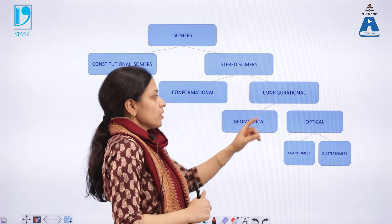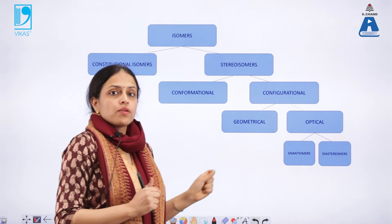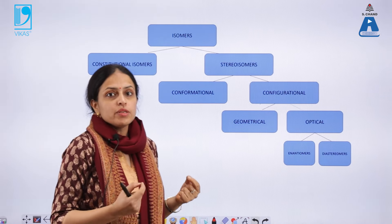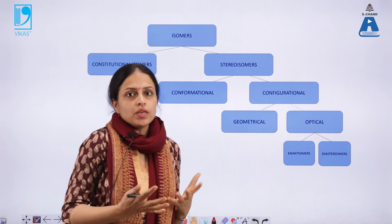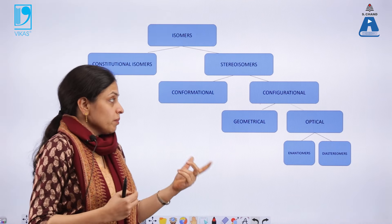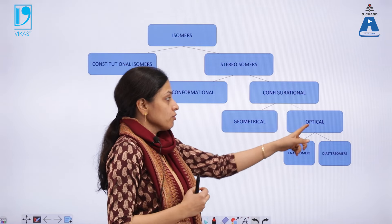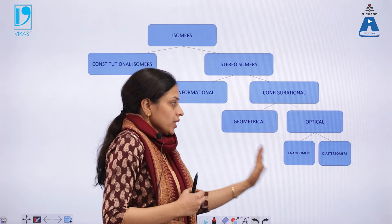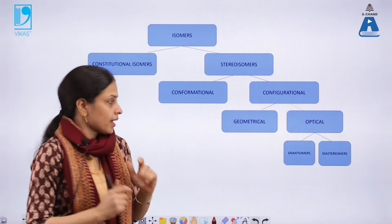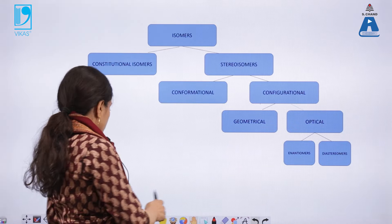Configurational isomers are further classified into two types: geometrical and optical isomers. Optical, as the name suggests, deals with optical activity, and we will also learn how we measure optical activity. Optical isomers are further divided into enantiomers and diastereomers.